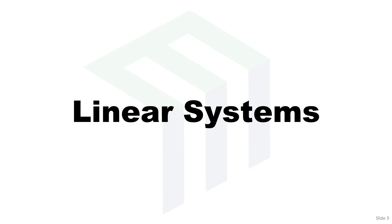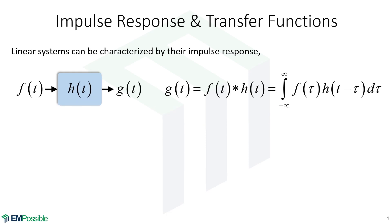Linear systems. This is not going to be a comprehensive discussion of linear systems, but roughly we can say that if a system is linear, we can characterize it with an impulse response, which we write as H of T. So if we have an input F and an output G, we can calculate the output by convolving the input with the impulse response. Here's our integral equation to calculate that convolution. This is all a time domain thing.